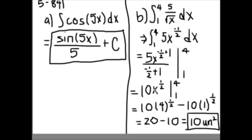Then you input these two numbers into x. So it would be 10 times 4 to the 1 half minus 10 times 1 to the 1 half, which gives you 20 minus 10, which equals 10. Don't forget units.